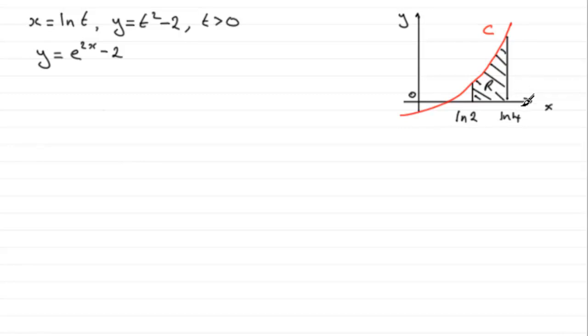So this is a typical volumes of revolution question. Now in the previous part we found out that the Cartesian equation for this curve C was y equals e to the 2x minus 2. So you could use the Cartesian form to work out the volume of revolution.